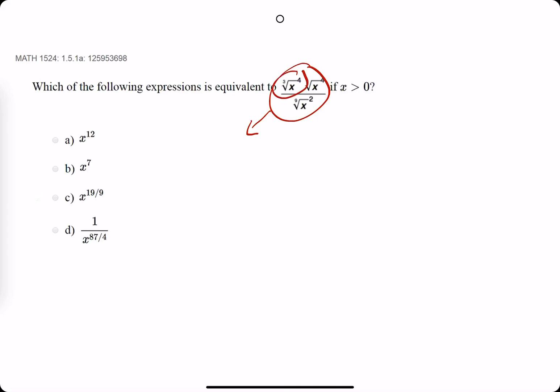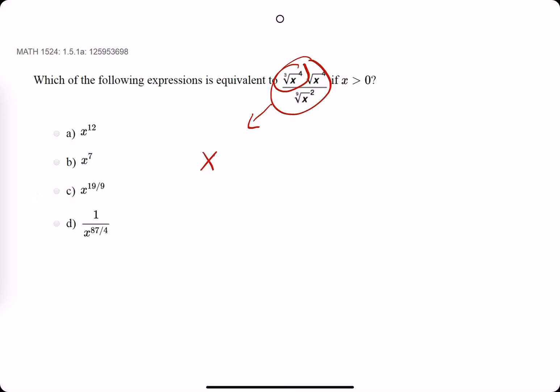So we start with this term here. We have the cube root of x raised to the fourth power. So everything's being raised to the fourth. So I'm going to start with the cube root of x, which is rewritten as x to the one-third, and all that's being raised to the fourth. So that three is the one-third, and that four is that four.